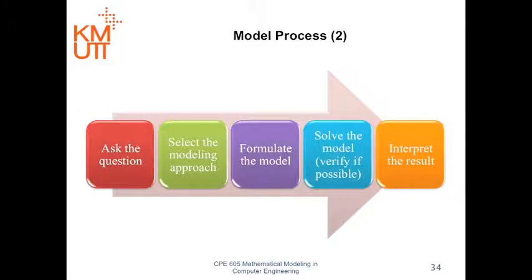This is another view of the modeling process. It is just like the classical notion of scientific method. We start from asking the right question about the phenomenon we study. Then selecting an appropriate model to answer that question or solve the problem. After that, we need to formulate the model. This includes the training process, the optimization of parameters of the model. Then we have to solve and verify the model if possible. And then interpret the results of the model. If it answers the question clearly, then we can ask further questions.